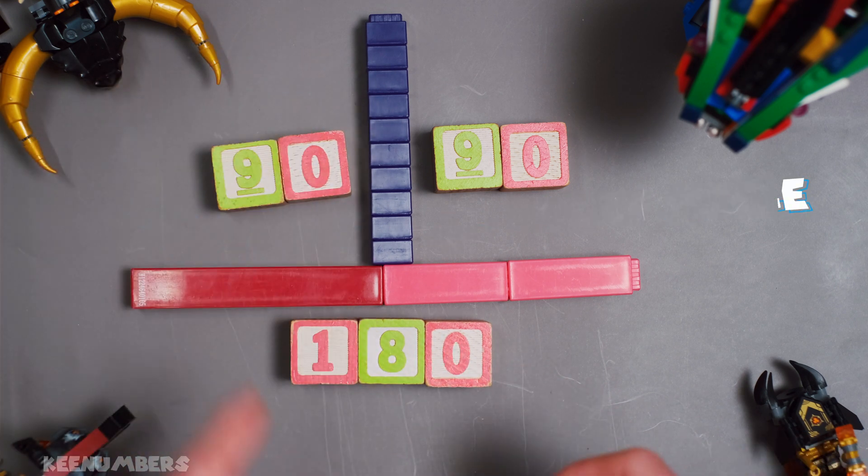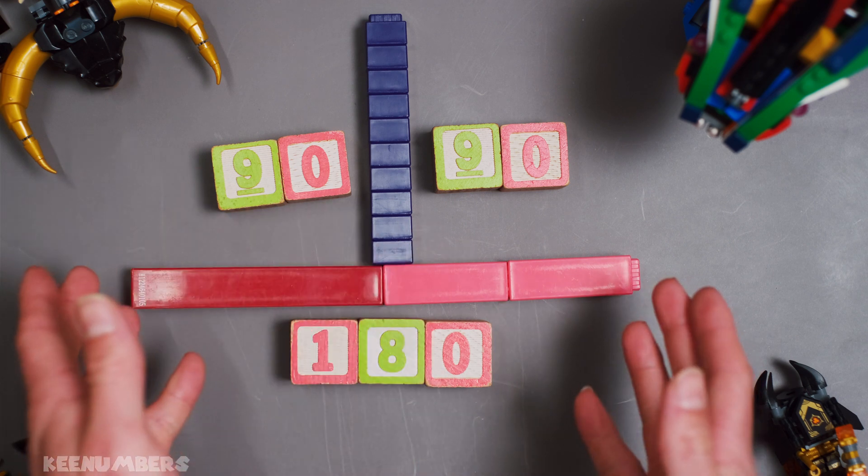What number plus 90 gives us 180? Oh, that's right. Bob's your uncle. 90 degrees. It's its own supplementary angle.